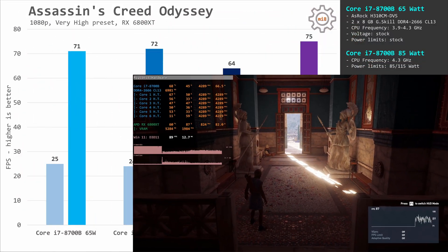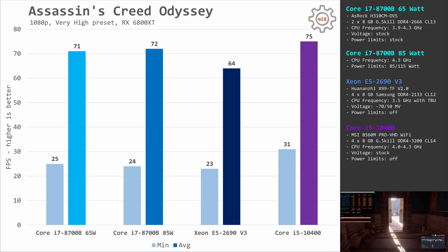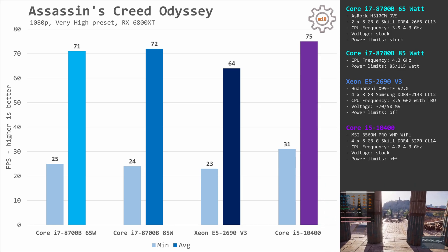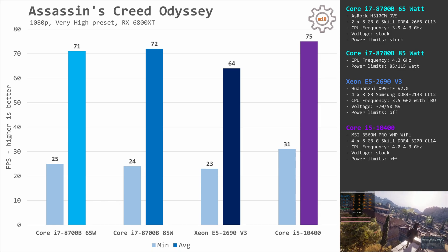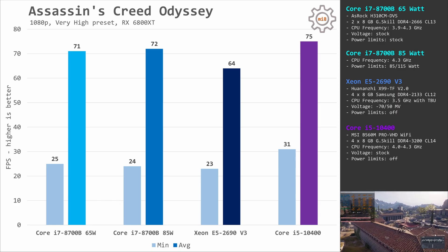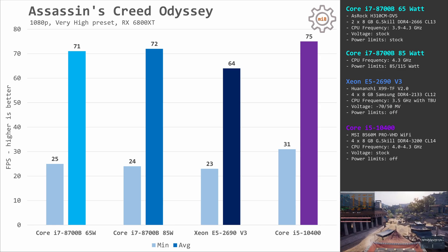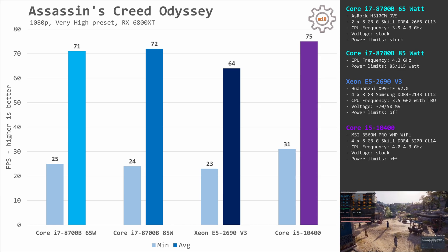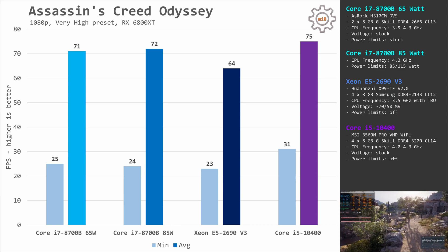Assassin's Creed Odyssey is a rather old and not really optimized game. Nevertheless, i7-8700B is matching Core i5-10400. In both configurations, i7 is rendering 25 and 71 fps. Core i5 is slightly better at 31 and 75 fps. Xeon E5-2690V3 is not too bad either at 23 and 64 fps.